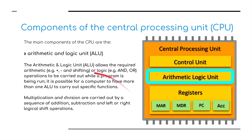The next thing is the arithmetic and logic unit. As the name suggests, this is used for mathematical calculations. It allows the required arithmetic or logic — pluses and minuses, shifting, multiplication and division, and the AND and OR gate operations — to be carried out whilst a program is being run. It is possible for a computer to have more than one ALU to carry out specific functions. Multiplication and division are carried out by a sequence of addition, subtraction, and left or right shifts — covered in Chapter 1.